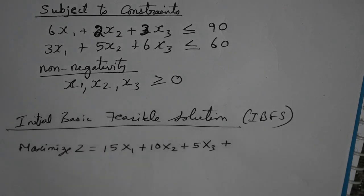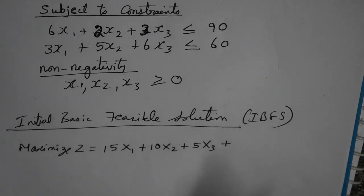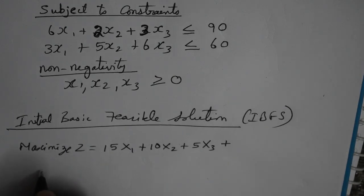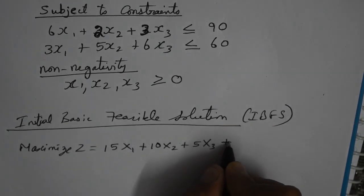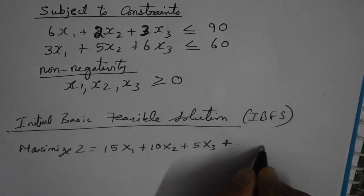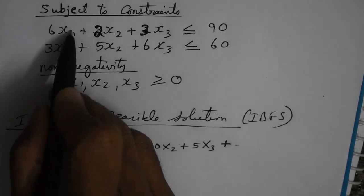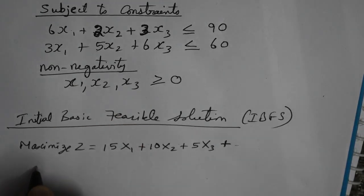The one type of non-basic variable I am going to introduce now is called the Slack Variable. Slack means leftover, or unused capacity. So let us take the first constraint. Because the constraint has a less-than-or-equal-to sign, we are going to add the slack variable. This is purely based on the type of constraint.